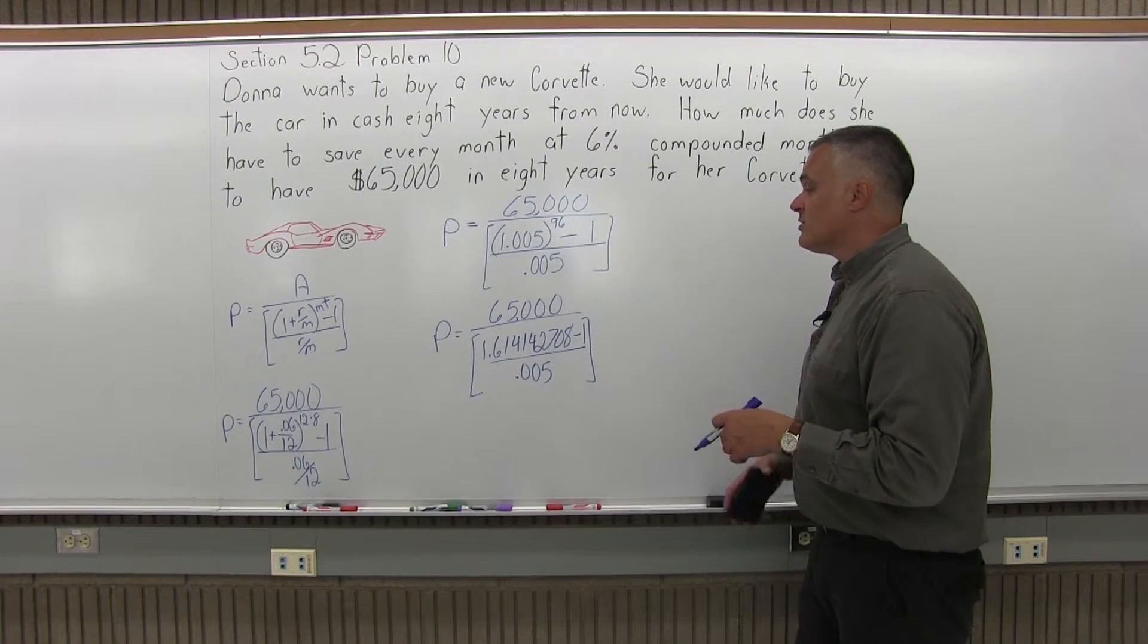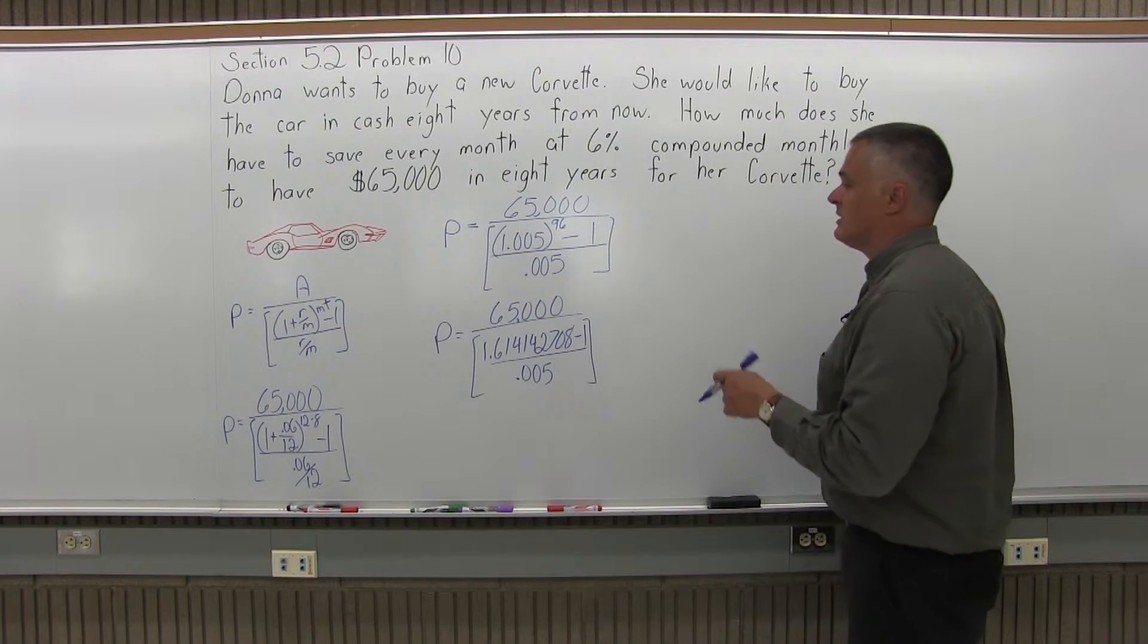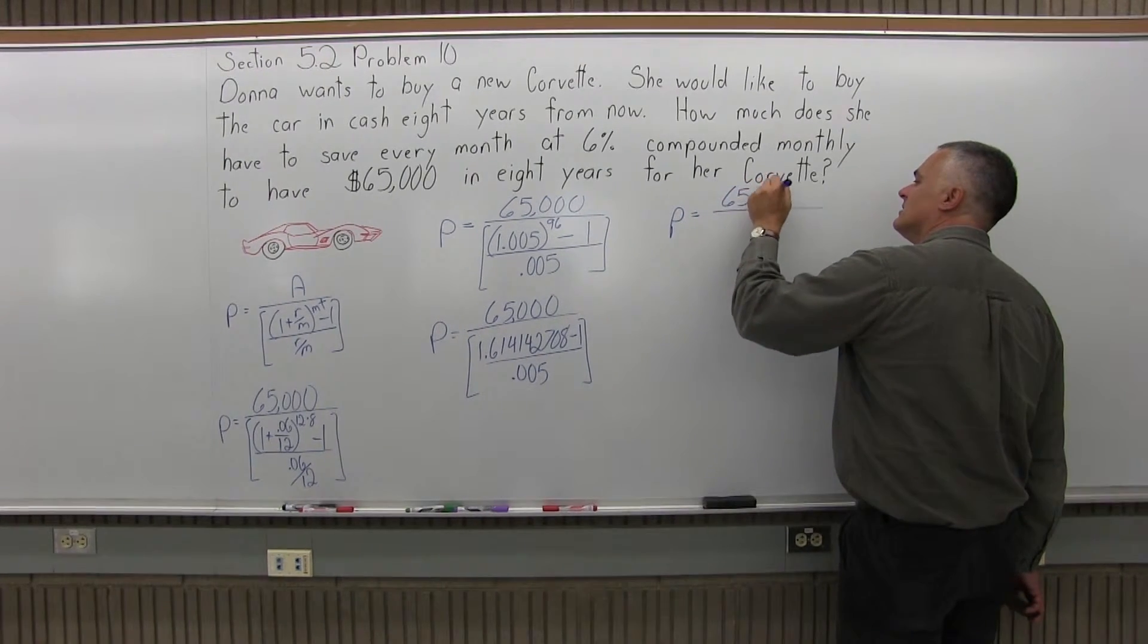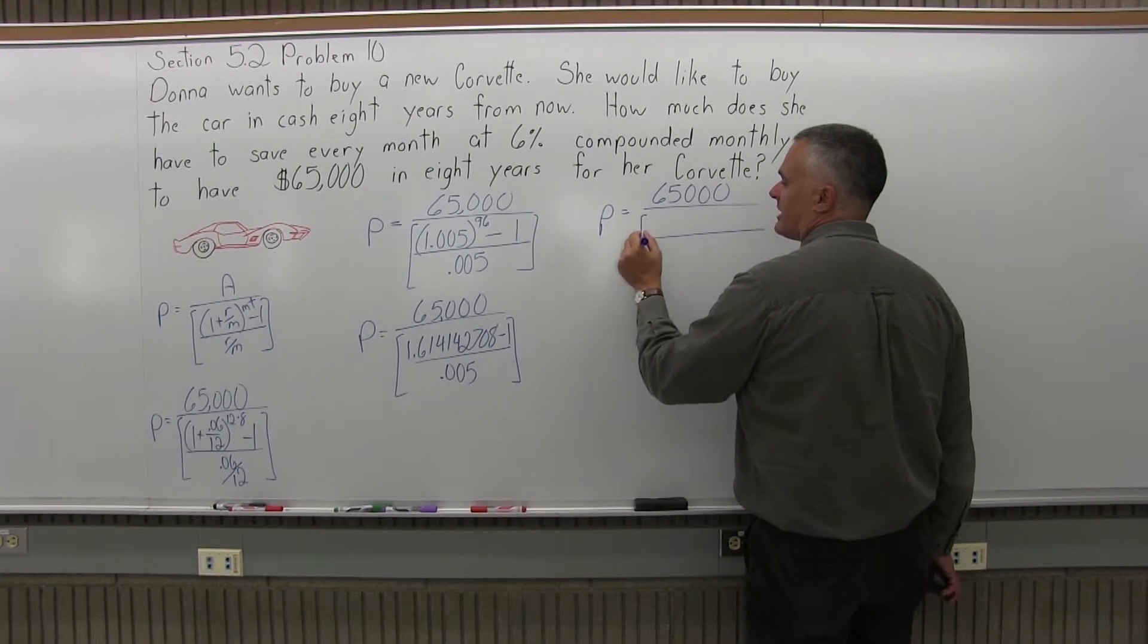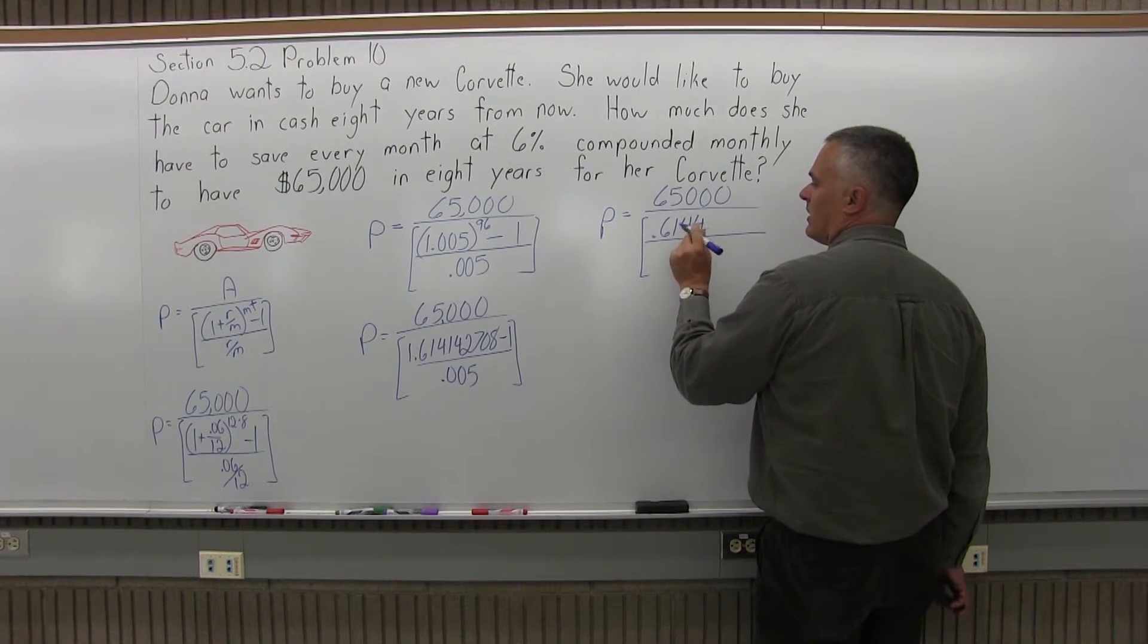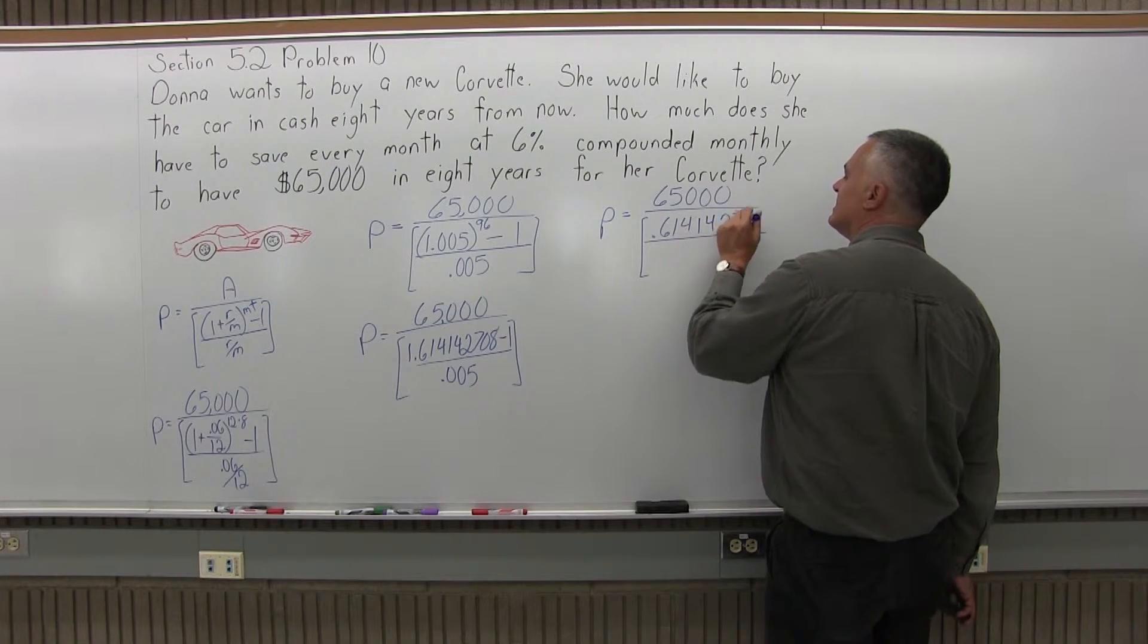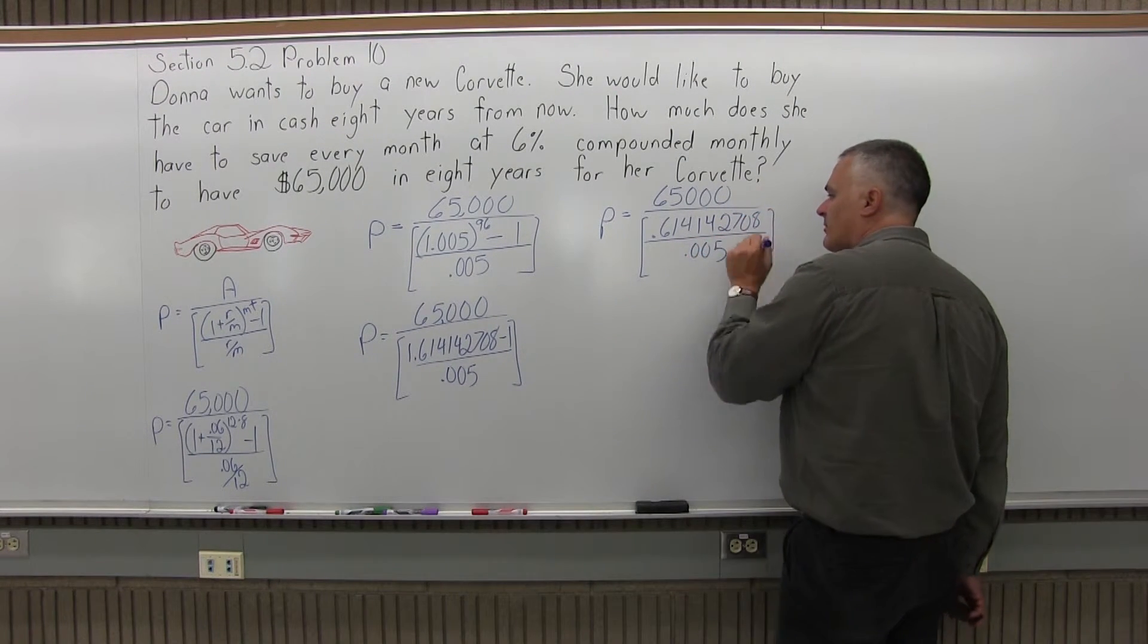So now in the numerator of the brackets I'll do 1.614142708 minus 1, and in the denominator of the brackets 0.005. And the next part of the problem I will have 65,000 over some brackets. In the numerator of the brackets I have 0.614142708, and in the denominator of the brackets 0.005, and I'll close up my brackets.